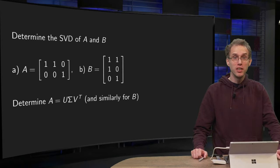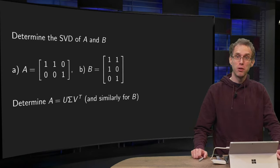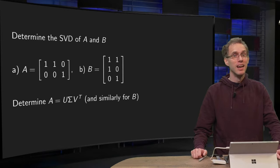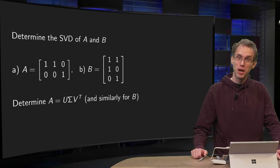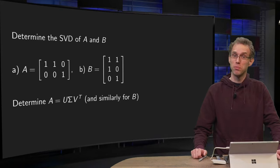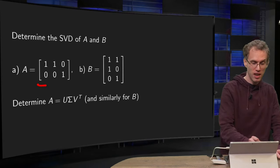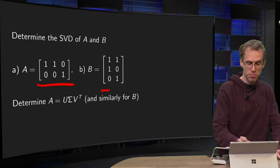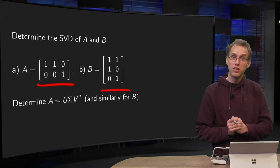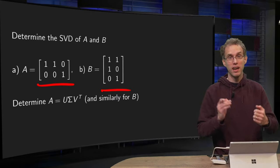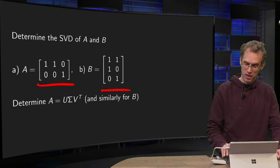We have already seen the procedure to compute a singular value decomposition of a matrix. Let us now look into two explicit examples to see where the technical difficulties arise in some specific cases. So we have a 2 by 3 matrix A and a 3 by 2 matrix B, and we are going to compute the singular value decomposition of A and of B. Let's start with A.